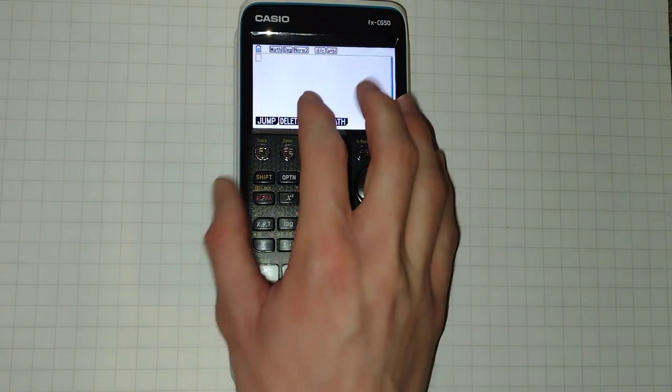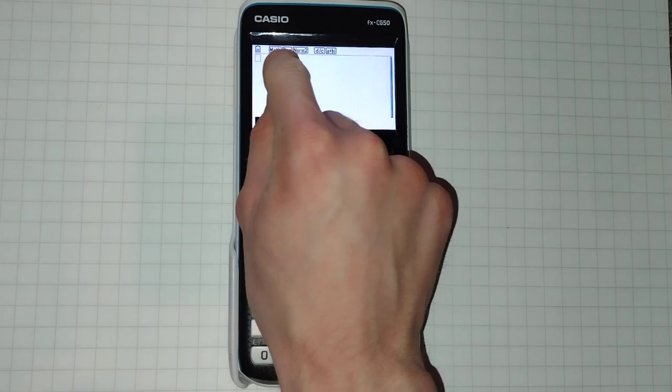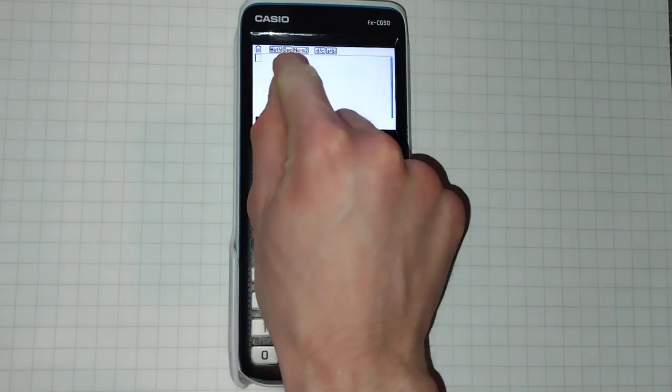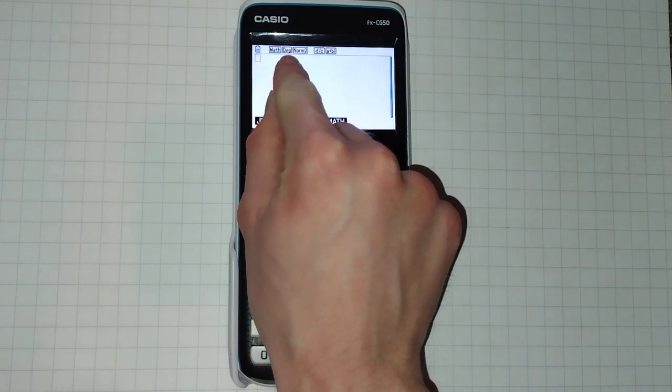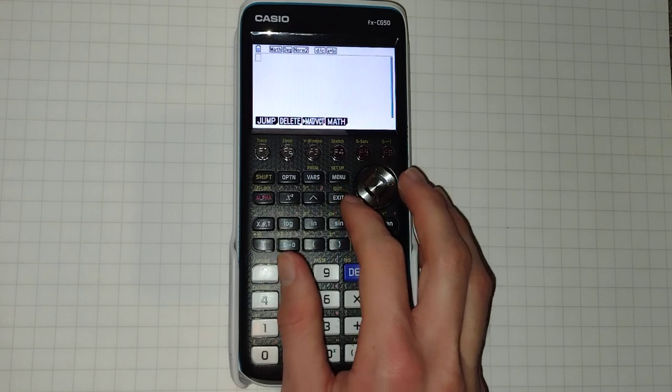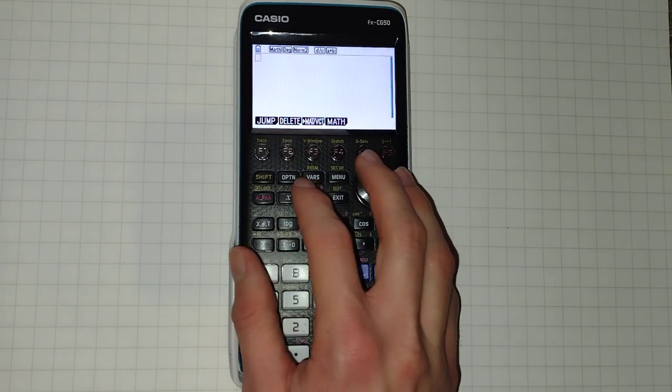You can check which angle unit your calculator is set to by looking at this bar up here. It is this little box here. For me it says deg for degrees. It says rad for radians and gra for gradians.